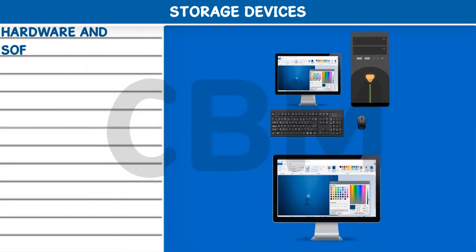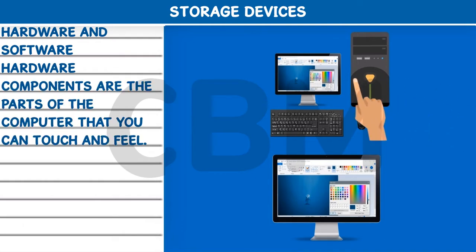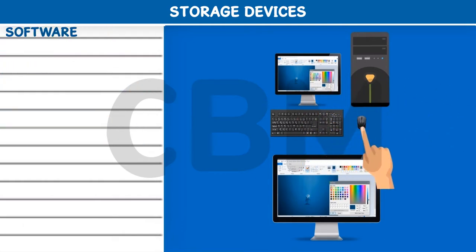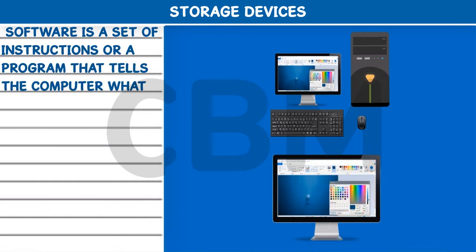Hardware and Software: Hardware components are the parts of the computer that you can touch and feel. Software is a set of instructions or a program that tells the computer what to do. It is a part of the computer which you cannot touch or feel.